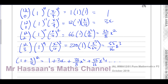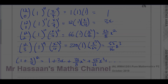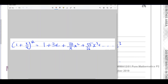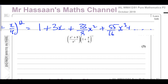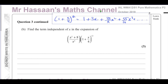Now for part b, I'll move this to the next page. Part b says: find the term independent of x in the expansion. The first part of it contains the same bracket we just expanded to the power of 12. When something is independent of x, it means it doesn't depend on x — so we need to find the term that ends up as a constant.